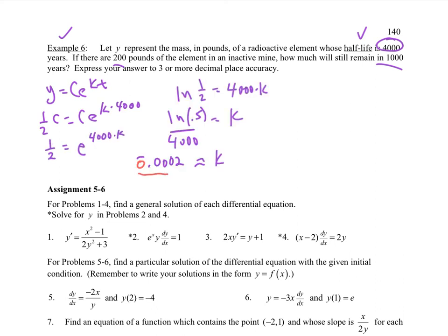There's my 4,000. So I'm going to go through and solve this. You can probably do this too. So I get k = -0.0002 over ten thousands.